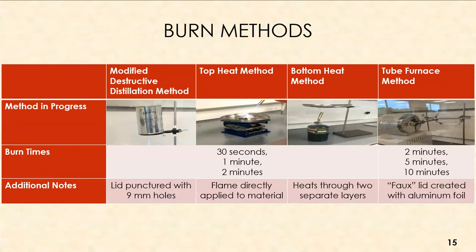For the top heat and bottom heat methods, burns are not done within a container but in a tin boat on a pan, heated from either above or below. The same side — the top layer — is always burned consistently. The flame is either directly applied to the material in top heat, or heating through two separate layers for bottom heat, allowing comparison of how direct versus indirect flame application affects the output.